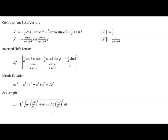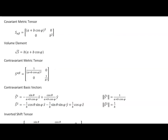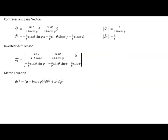Finally, the torus. We go through the same exercise, taking each non-zero element of the covariant metric tensor: first, (a plus b cosine phi) squared times dz^1 squared, which is d-theta squared. The second term is b-squared times dz^2 squared, which for the torus is d-phi squared. So the metric equation is (a plus b cosine phi) squared d-theta-squared plus b-squared d-phi-squared, and the arc length is the corresponding integral.